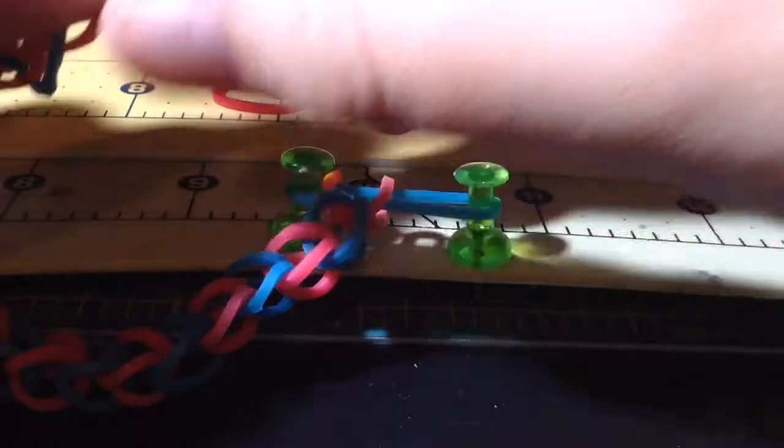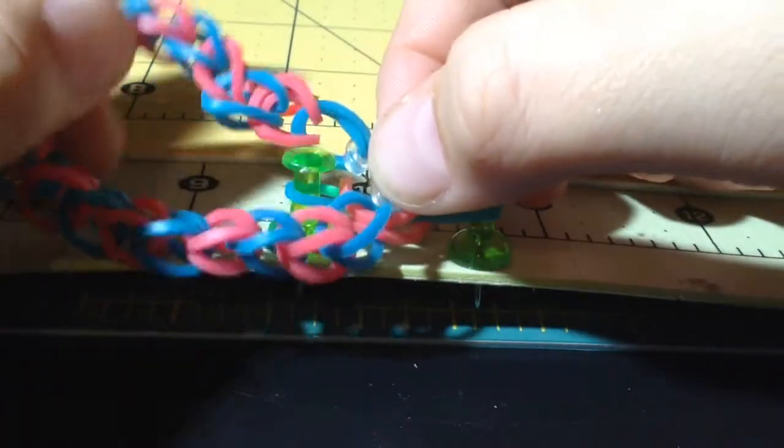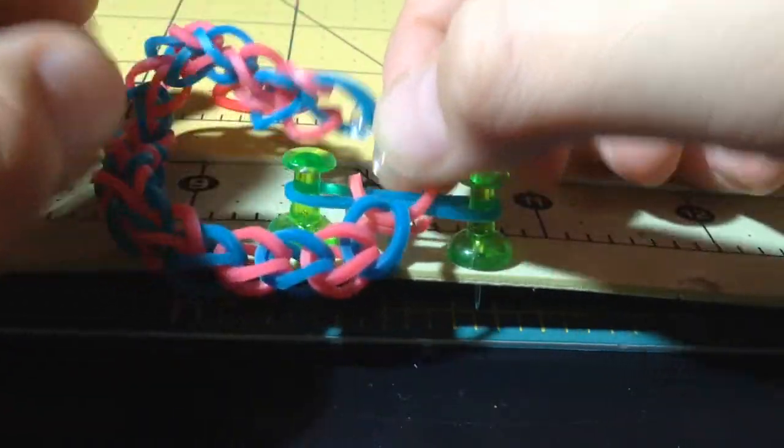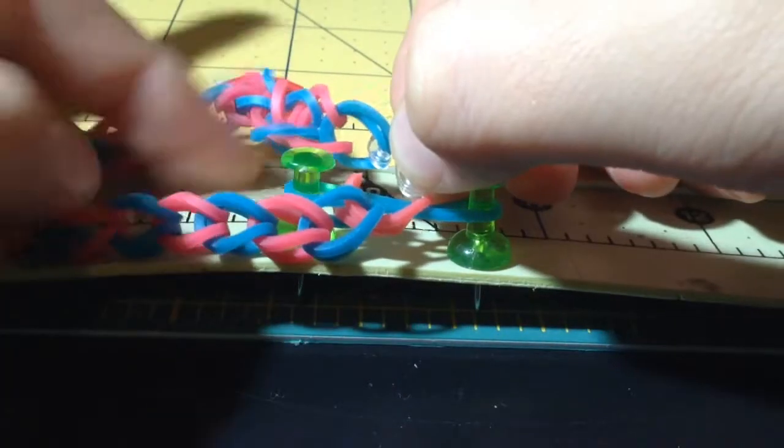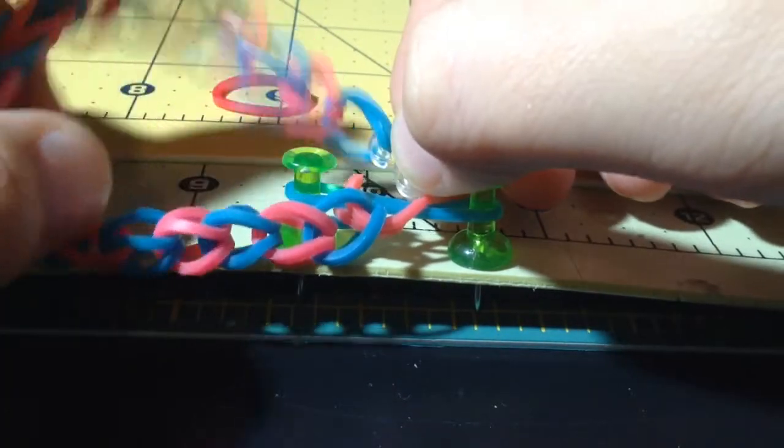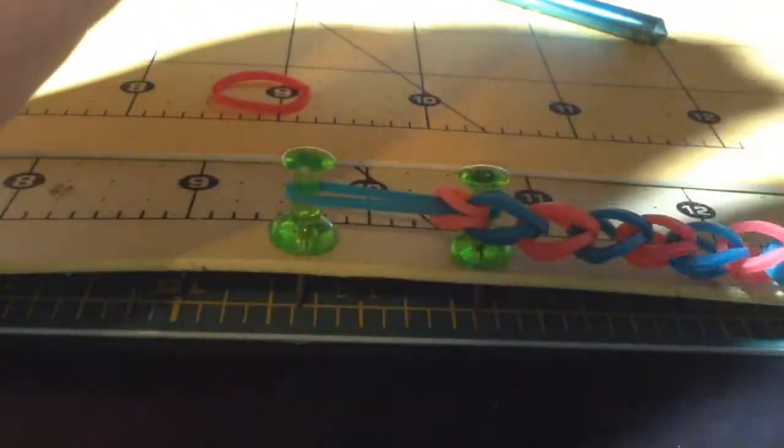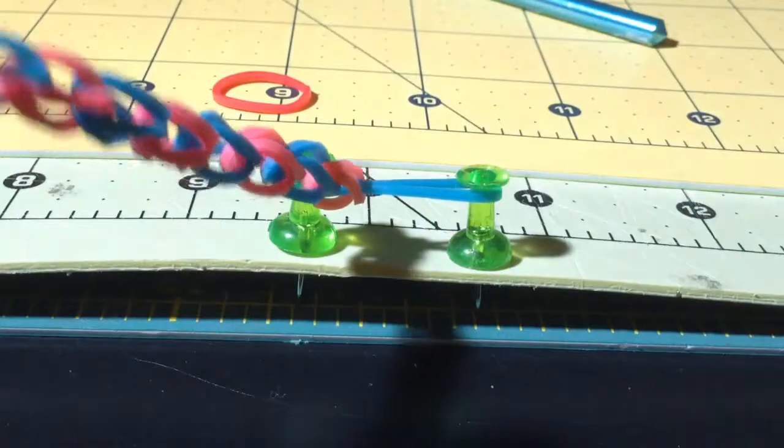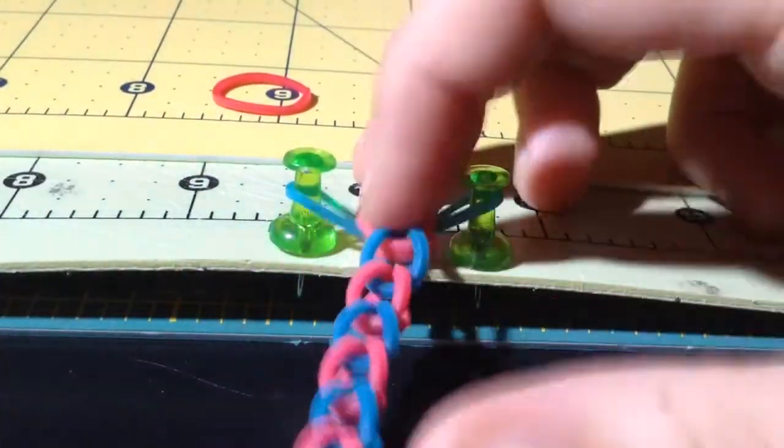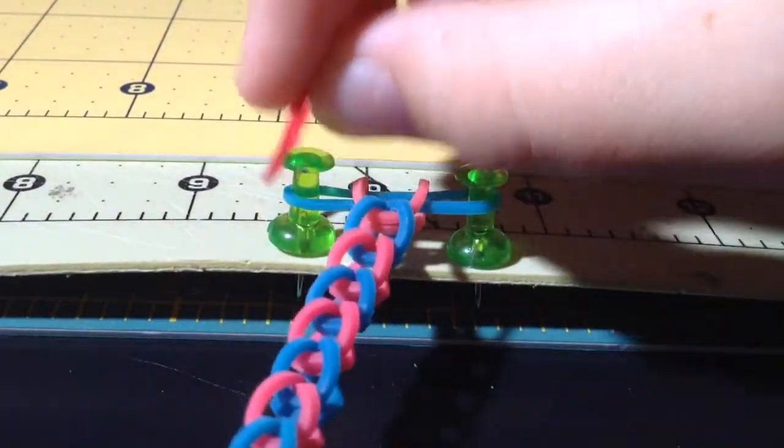So once you decide that your bracelet is big enough, just how to do that is just like size it out in what you think will be a good size. I think this will be a good size. It is about five inches, just like not even stretched. But that's not counting the extra loops that will be up here.